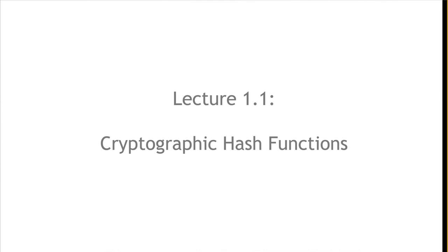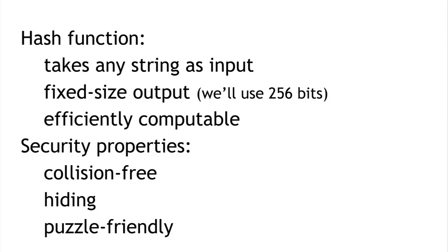In segment 1.1, we're going to talk about cryptographic hash functions — what they are and what their properties are, and then what their applications are. A cryptographic hash function is a mathematical function with three attributes. First, it can take any string as input of any size. It produces a fixed-size output — we'll use 256 bits, because that's what Bitcoin does. And it has to be efficiently computable: given a string, in a reasonable length of time you can figure out what the output is.